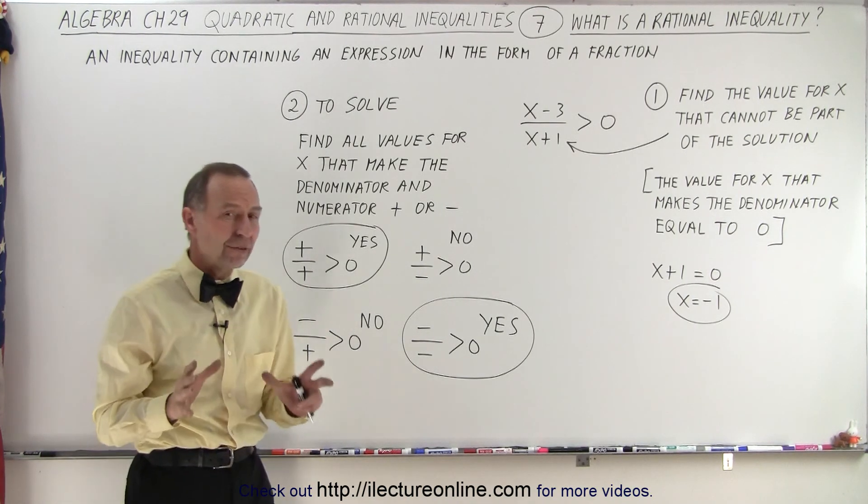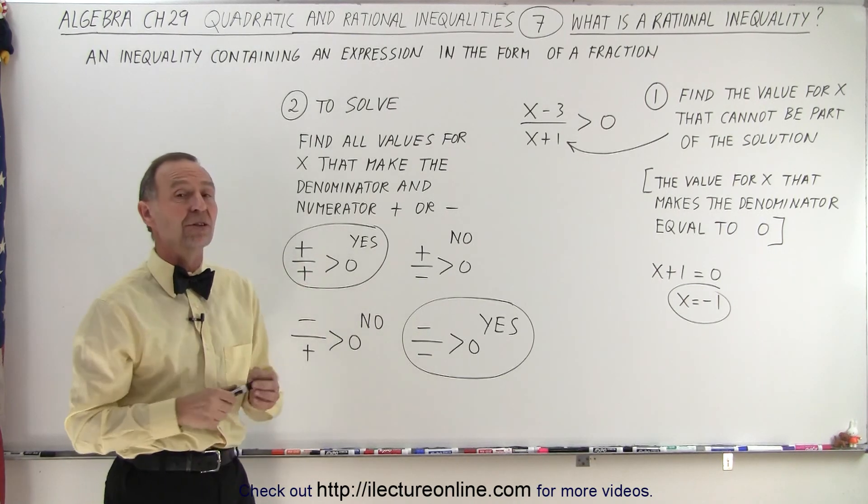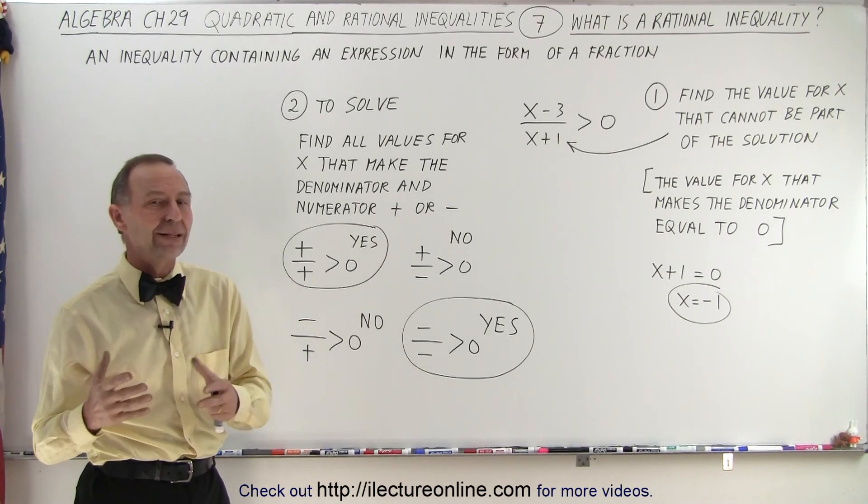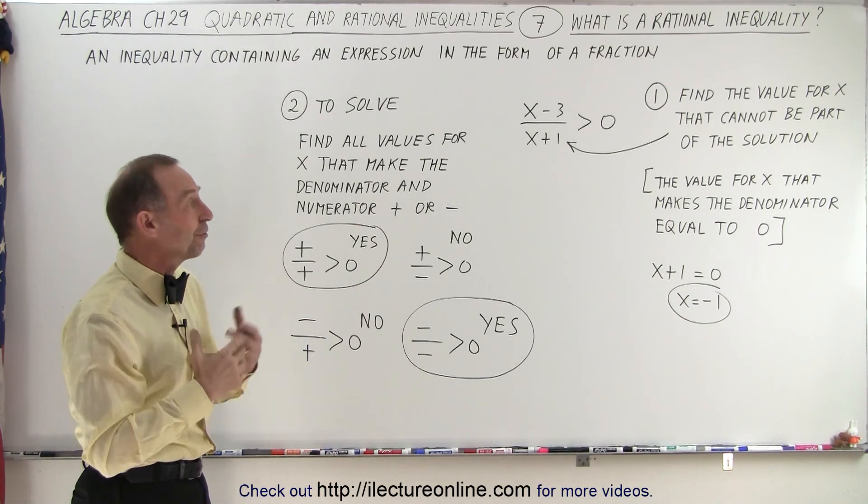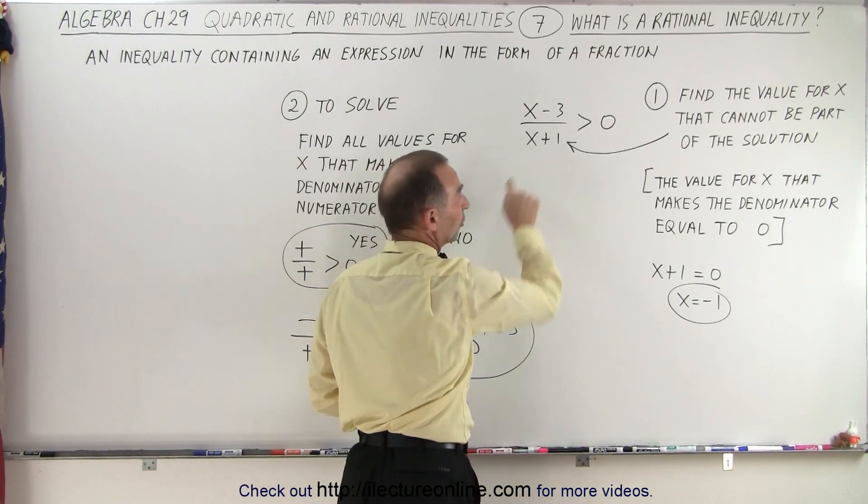So there's a couple of differences when we approach inequalities that are in the form of a rational expression. First of all, we have a denominator. And of course, a denominator can never be 0. So we first need to find all the values for x that will make the denominator equal to 0.